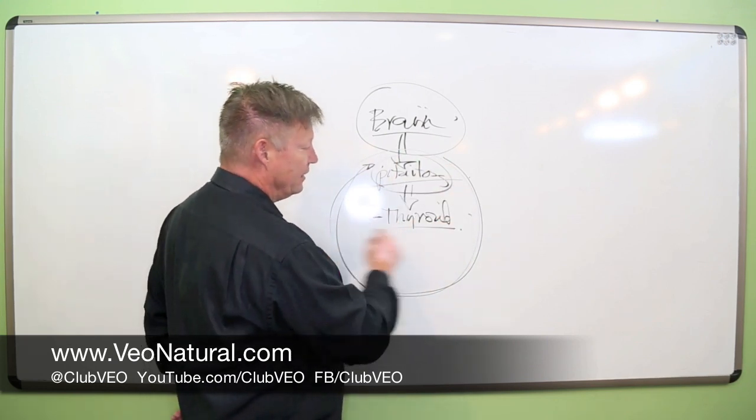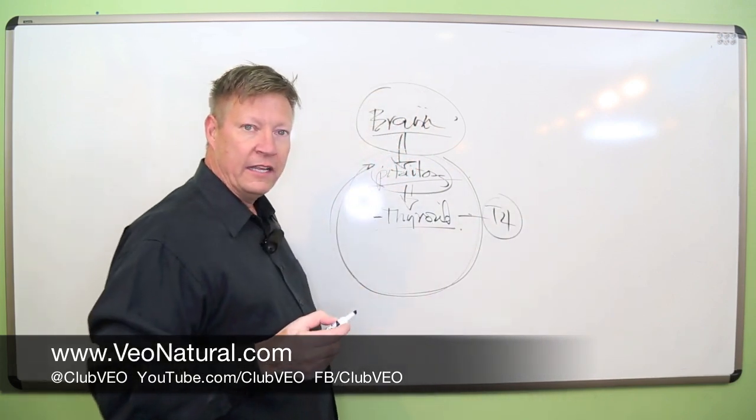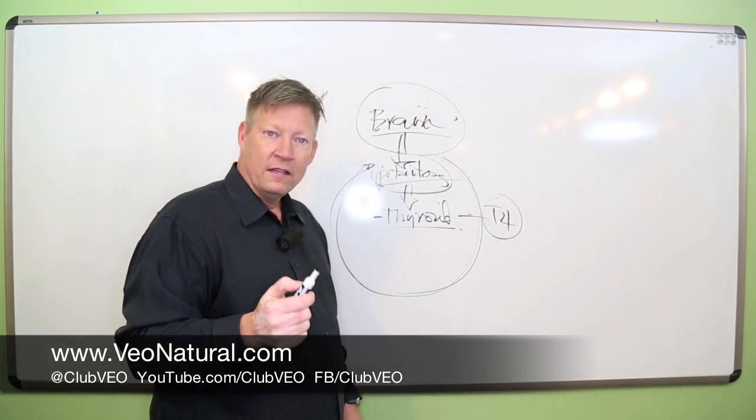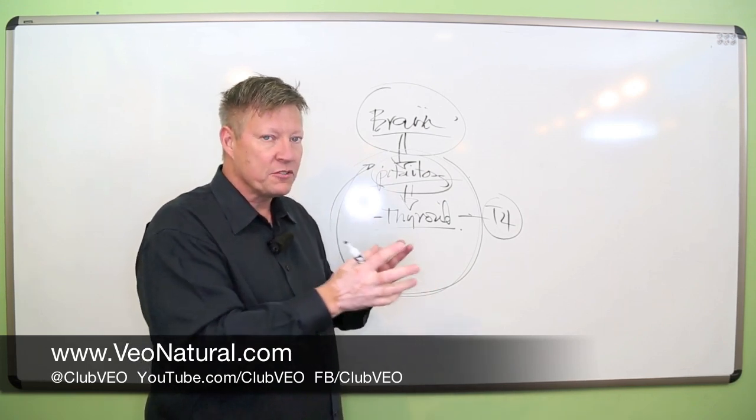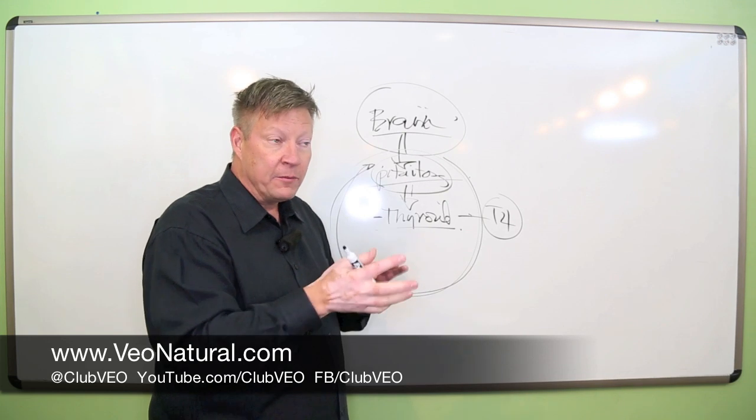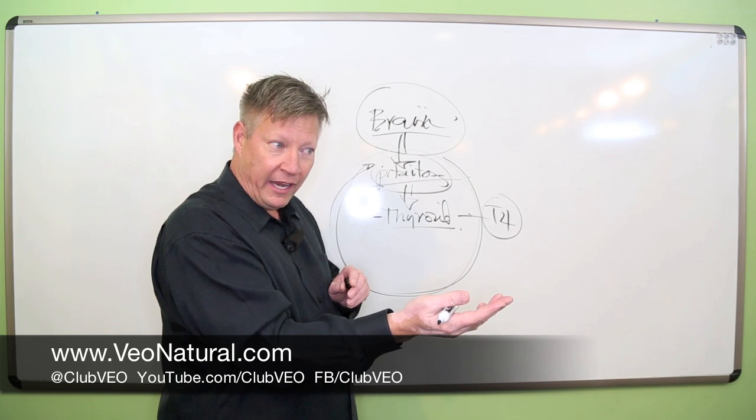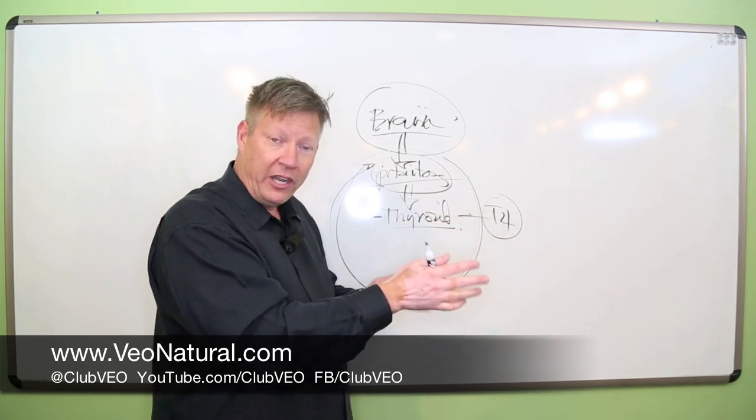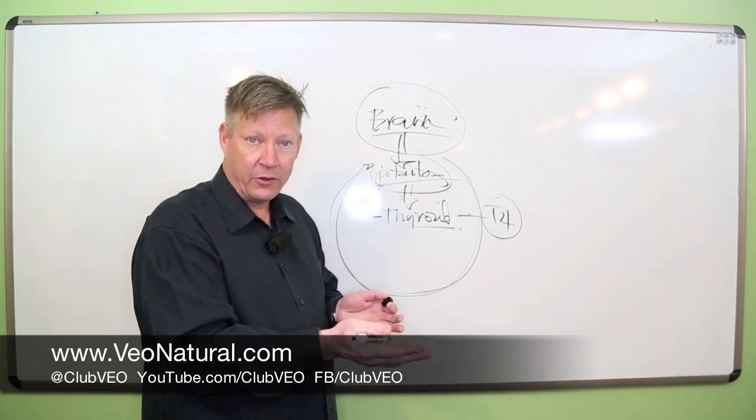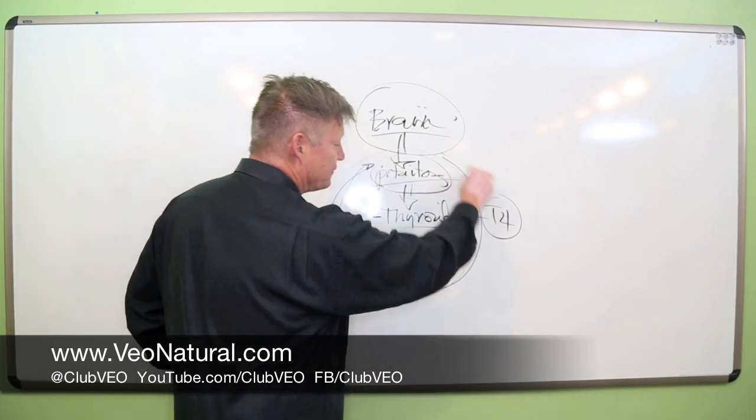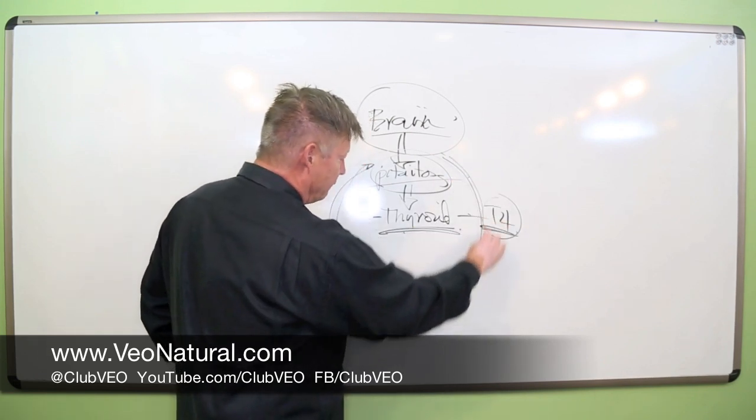The thyroid creates a hormone called T4. Now, T4, even though it is what's created, is not the primary source of thyroid that the body can actually utilize. It has to peel off one, so to speak, and become T3 to be a usable format inside of the body for many of the functions the thyroid does. So, as it's floating around, the thyroid creates T4 for the body, floats around.